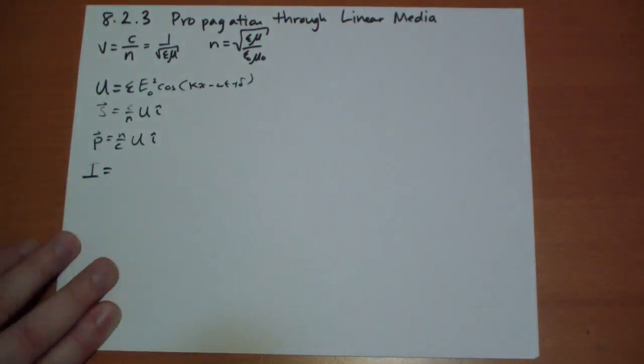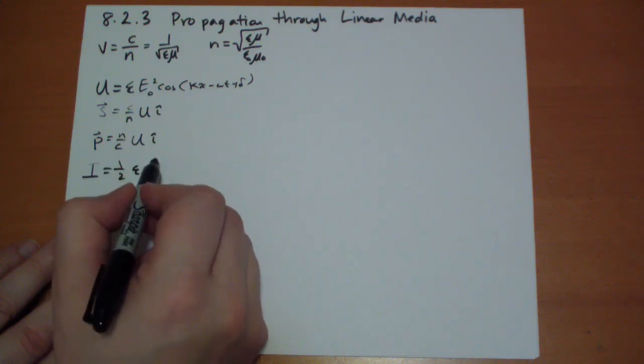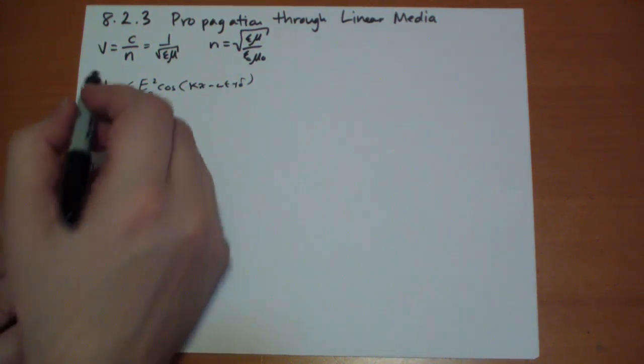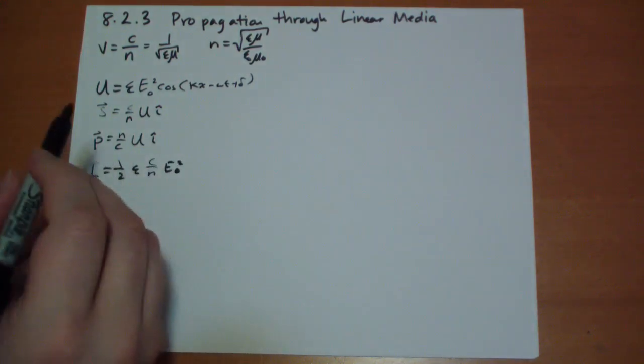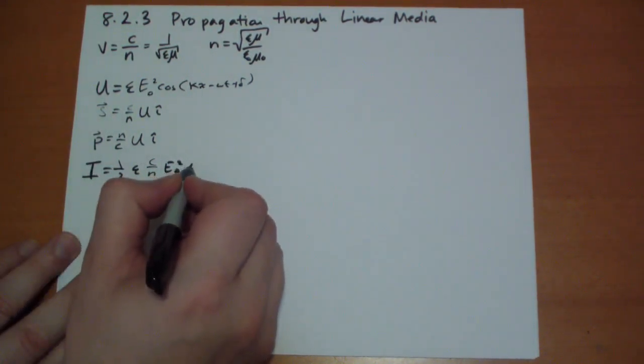And our intensity, which is the average of S, is just one half epsilon c over n, E not squared, in the i hat direction. Easy peasy, nothing hard here.